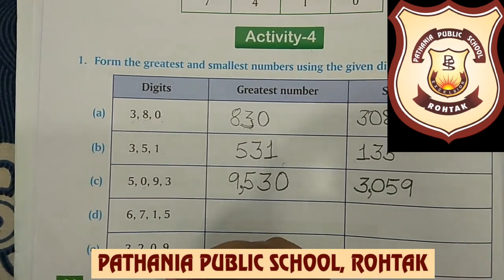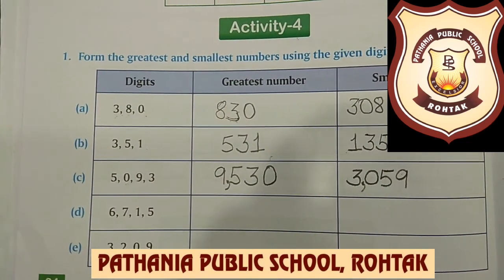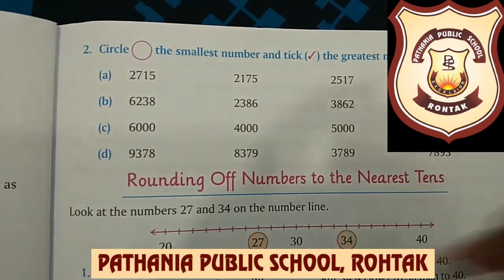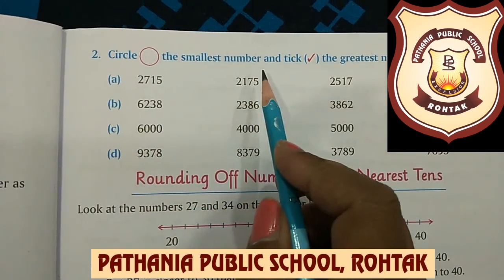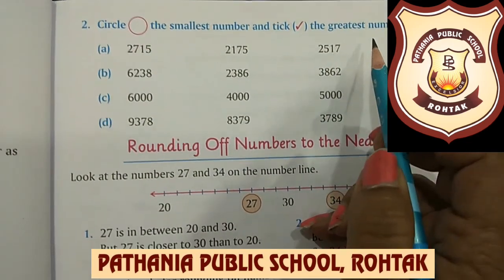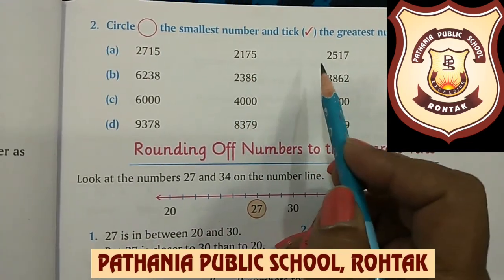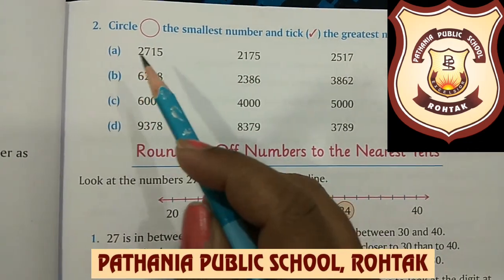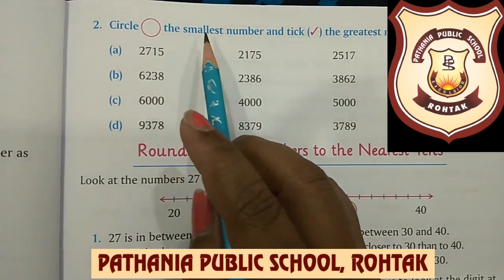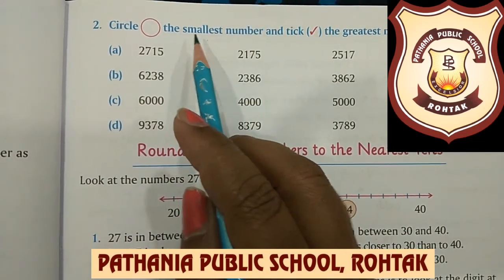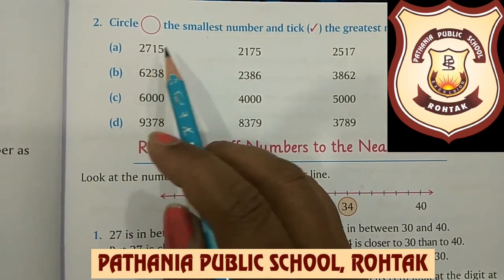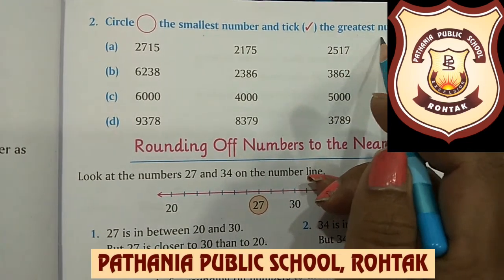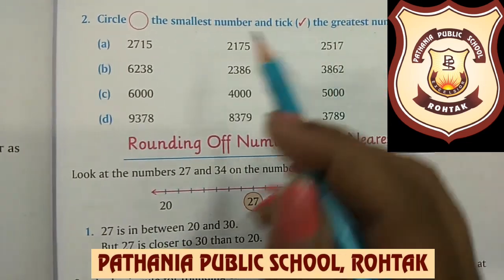Parts D and E you will do yourself. Now the second question: Circle the smallest number and tick the greatest number. A set of numbers is given in each part and you need to find the smallest number to circle and the greatest number to tick.